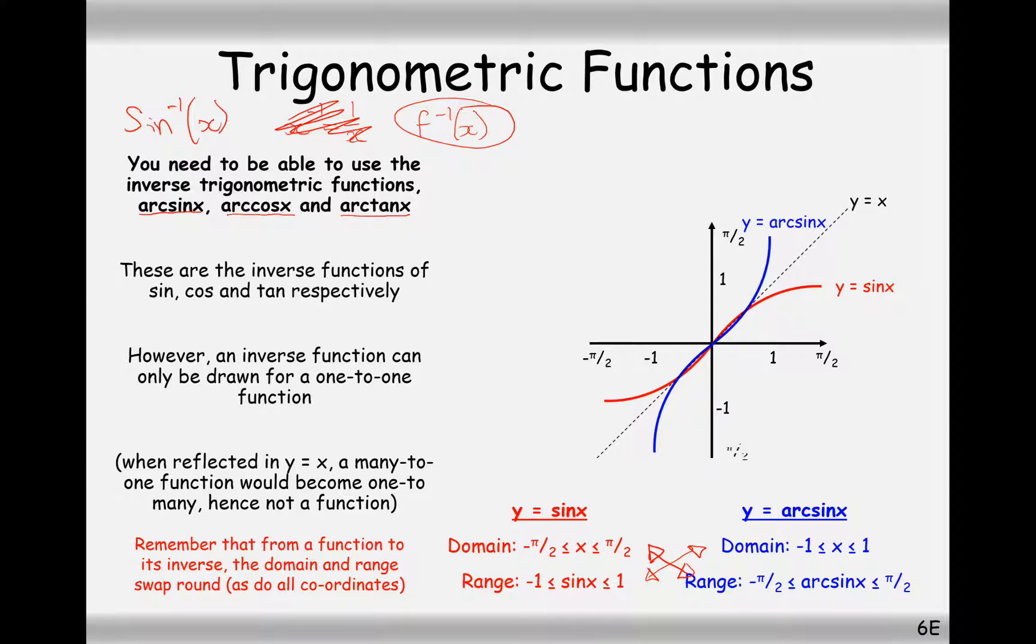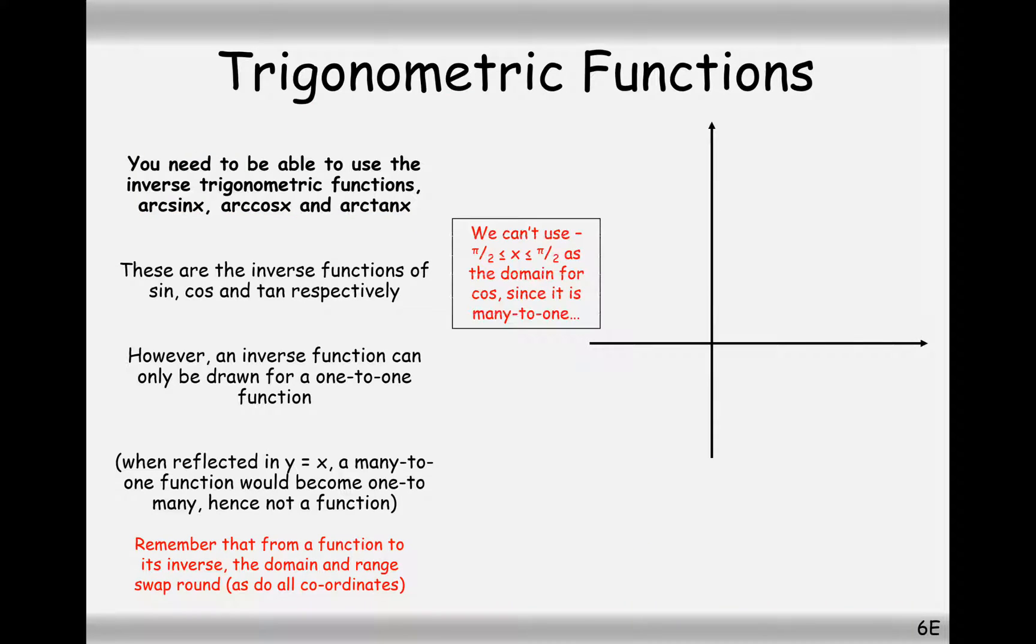Let's do the same for cos and tan then. Cos has to be restricted between 0 up to pi radians, so that it is a 1 to 1 function, and then we can inverse that function.